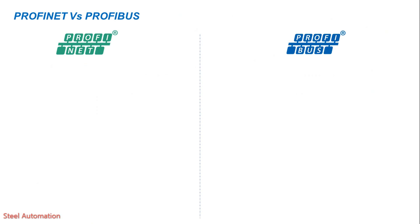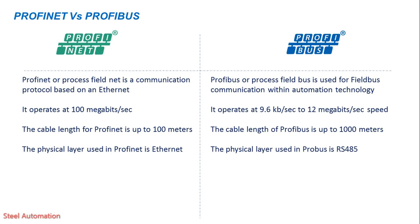What is the difference between Profinet and Profibus? Profinet is a communication protocol based on Ethernet, whereas Profibus is used for fieldbus communication within automation technology. Profinet operates at 100 Mbps, whereas Profibus operates at 9.6 kbps to 12 Mbps. The cable length for Profinet is up to 100 meters, whereas the cable length for Profibus is up to 1000 meters. The physical layer used in Profinet is Ethernet, whereas the physical layer used in Profibus is RS-485.